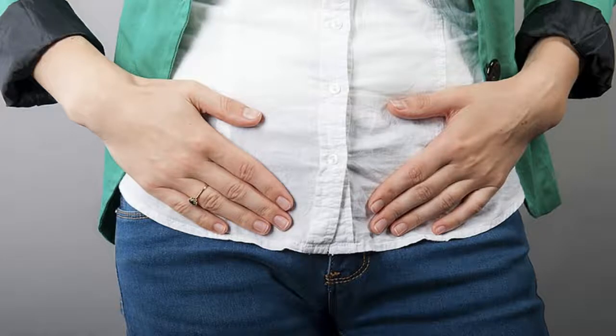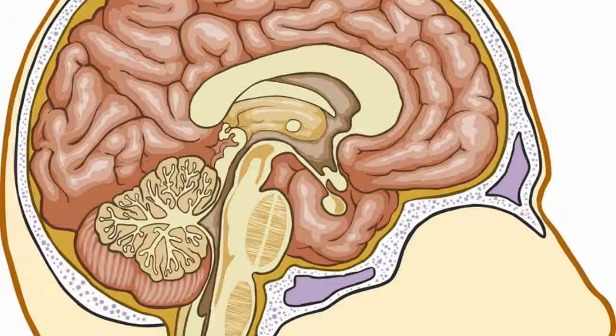Diencephalon is located surrounding the third ventricle and adjacent to the midbrain. Since thalamus is the largest part of this region, much of the neural tissue of diencephalon is found in the thalamus.